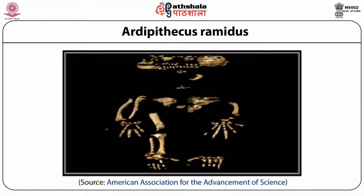More recently, a number of fragmentary fossils discovered between 1997 and 2001, dated from 5.25 to 5.8 million years old, were assigned first to a new subspecies Ardipithecus ramidus kadabba, and then later as a new species Ardipithecus kadabba. One of these fossils is a toe bone belonging to a bipedal creature, but it is a few hundred thousand years younger than the rest of the fossils, so its identification with kadabba is not as firm as the other fossils.